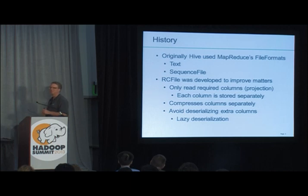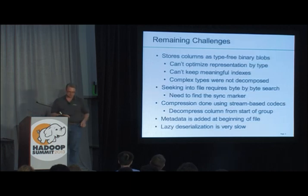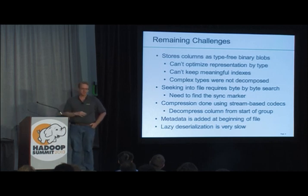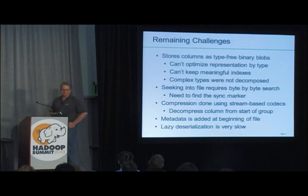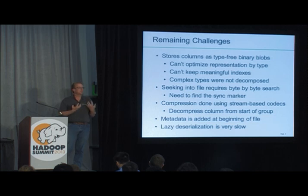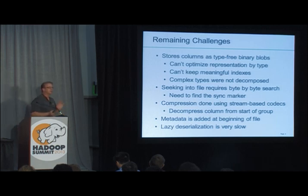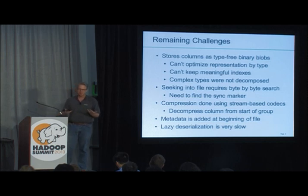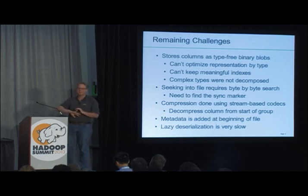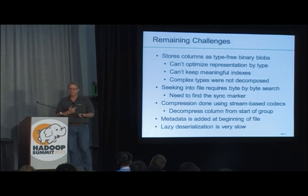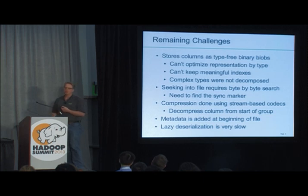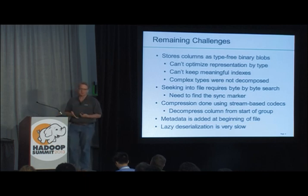RC file compressed bytes separately so you could decompress only what you needed. It also added lazy deserialization — deferring decompression of the rest of the row until you knew you needed it. That helped a lot and made things run very fast. But there were remaining challenges. RC file treats everything as a binary blob. It treats each column as a set of bytes and doesn't know whether it's an integer, string, or any other type.